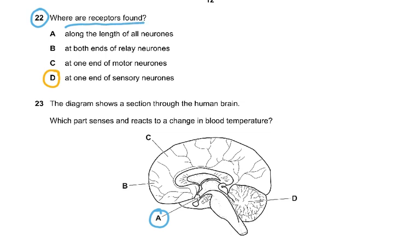Where are receptors found? Along the length of all neurons, at both ends of relay neurons, at one end of motor, at one end of sensory neurons. Sensory, like when you touch something hot, where did it perceive it? Sensory neurons. Sensory neurons contain these sensory receptors and carry impulses along. So at one end of the sensory neuron, if you remember the reflex arc, pain receptors, touch receptors, pressure receptors in your skin, light receptors in the retina of your eye. Receptors will only be in the sensory neurons, not in the motor, not in the relay, and not all neurons.